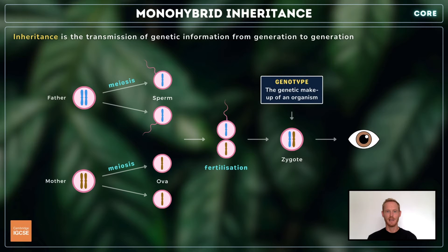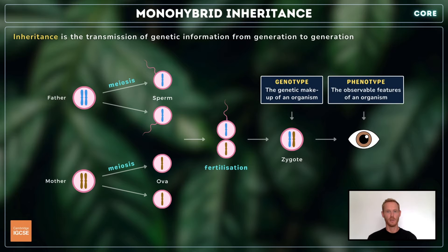The genetic makeup of an individual, including all of its genes and alleles, is called genotype, while the observable features of an organism — like eye colour, hair colour, height and blood type — are collectively termed phenotype.